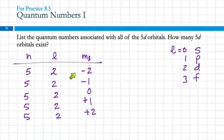Each set of quantum numbers is unique for each orbital — like a social security number or VIN number on a car, where different parts tell you different pieces of information. The combination (5, 2, -2) describes one orbital — one bed that electrons could be sleeping in.